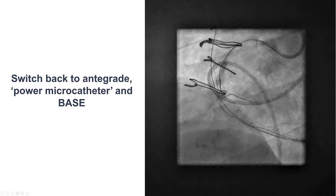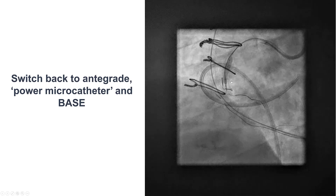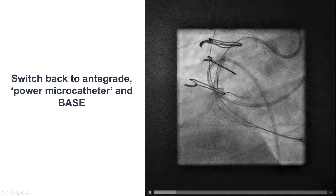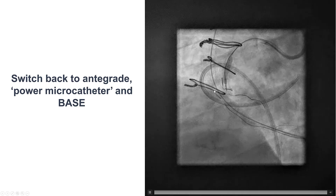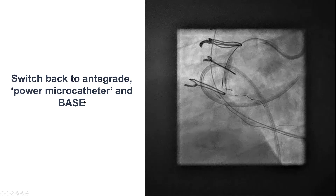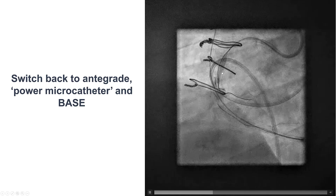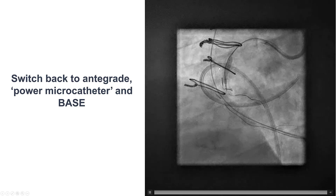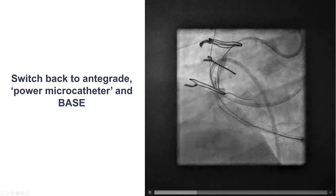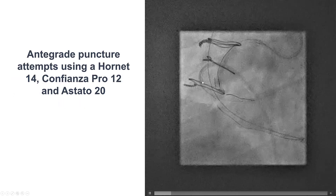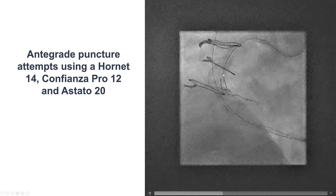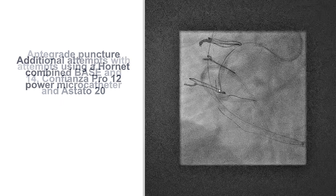We switched again to antegrade attempts because we were unable to further advance the retrograde guide wire, which was in the extraplural space. We were unable to advance wires, so we decided to perform the BASE technique — balloon-assisted subintimal entry — using a large balloon to create a dissection into the wall of the right coronary artery and then tried to get an antegrade wire into the extraplural space. Despite using multiple guide wires, we were unsuccessful in achieving that.